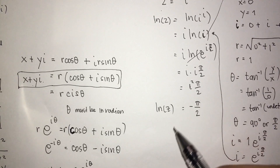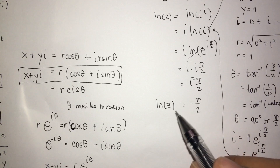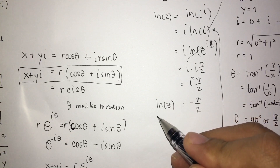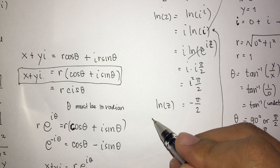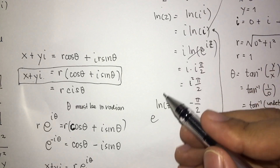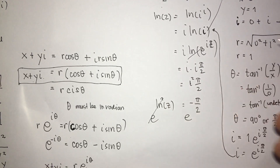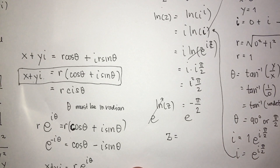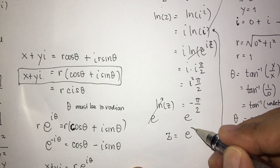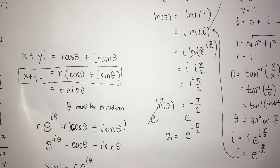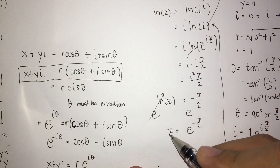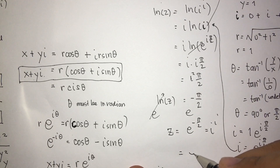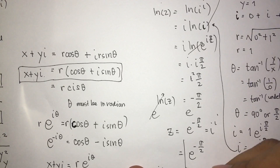We're not done yet since we still need to transform ln z to simply z. To do that, we raise both sides as exponents of base e. Applying the laws of logarithm, the left side simplifies to z and the right side becomes e raised to negative pi over 2. Therefore, z equals e raised to negative pi over 2, meaning i raised to i equals e raised to negative pi over 2.